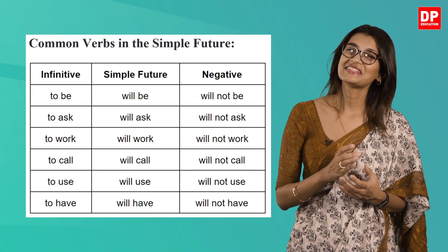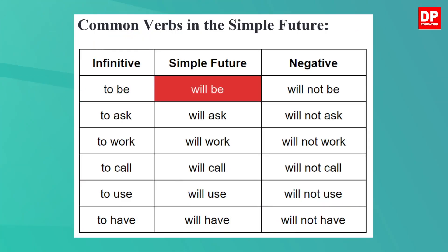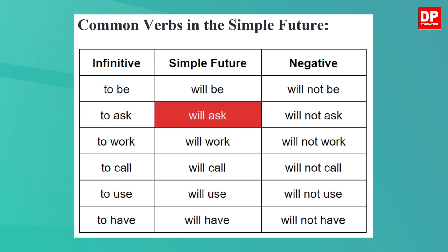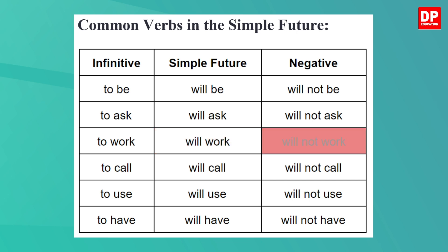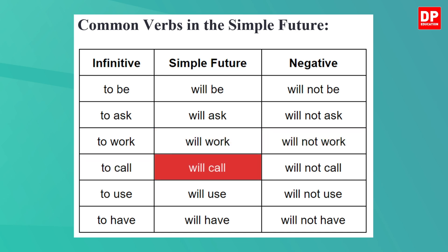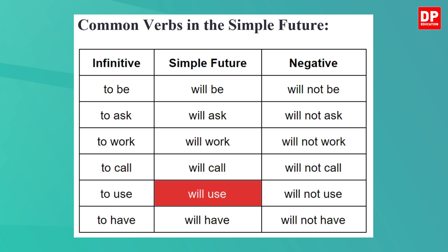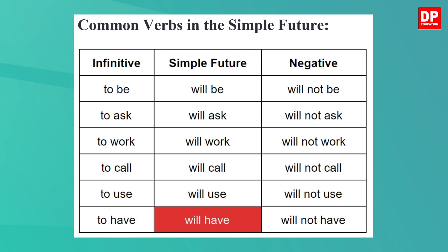Let's look at some common verbs in the simple future. The negative has also been given. 'To be': will be / will not be. 'To ask': will ask / will not ask. 'To work': will work / will not work. 'To call': will call / will not call. 'To use': will use / will not use. 'To have': will have / will not have. You must now have a thorough understanding of the simple future.